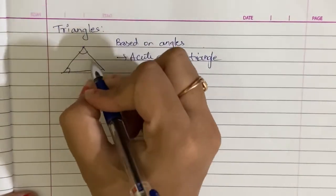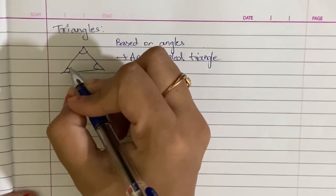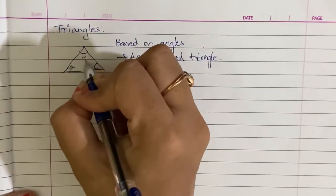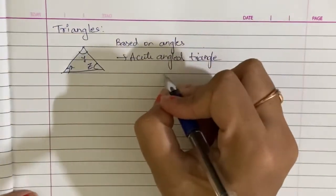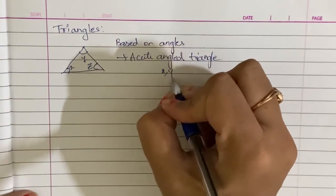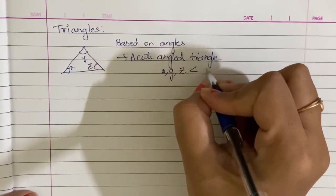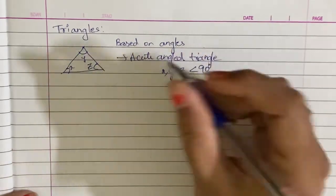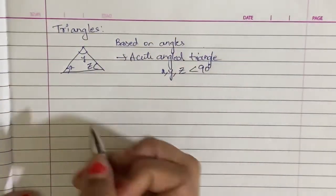All the angles — this triangle has 3 angles: X, Y, Z. All the angles X, Y, Z are less than 90 degrees. This is called an acute angle triangle.